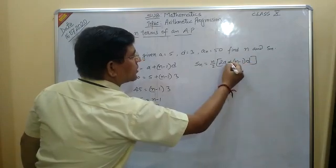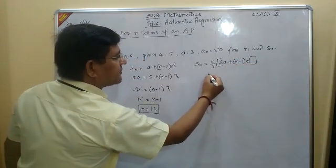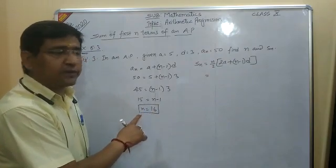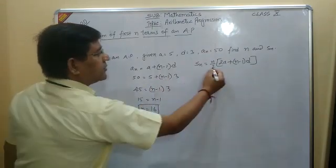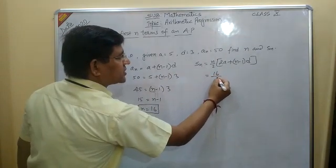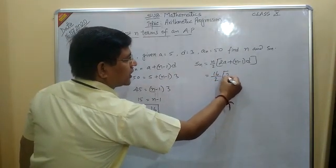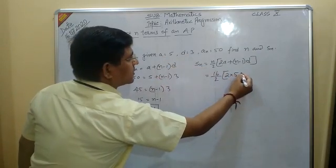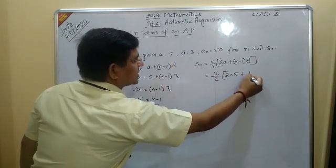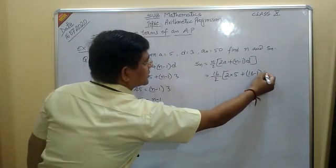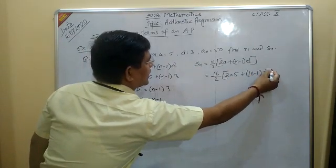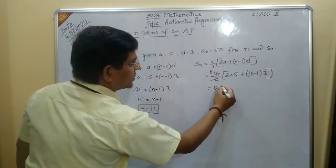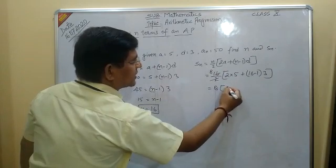That's n over 2 times (2a plus (n minus 1) into d). d is 3, right? Substitute: 8 into... plus (n minus 1) into d.